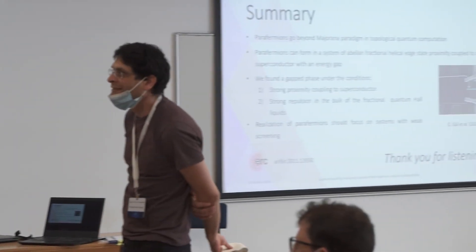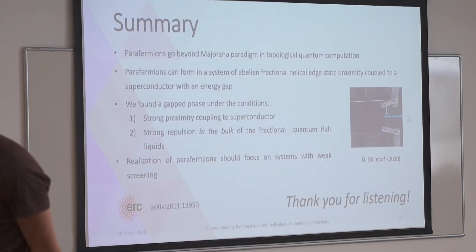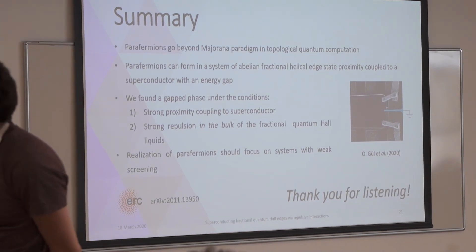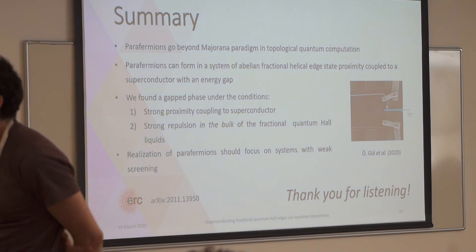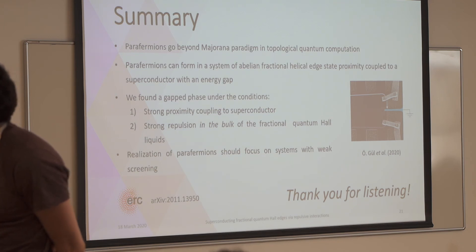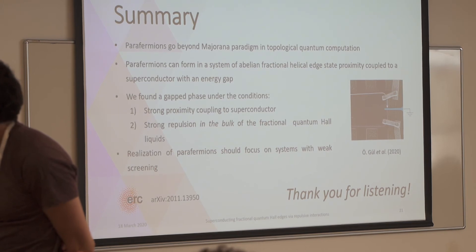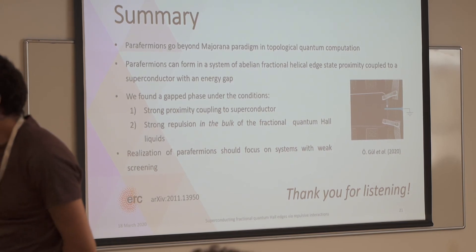Follow-up: What exactly in transport? Does the resistivity drop? Answer: You can consider the system — there's an incoming edge mode and an outgoing edge mode. If in this process all the electrons become holes, that means you have a perfect Andreev process, and that corresponds to having a gap. That's one kind of signature you can look for.